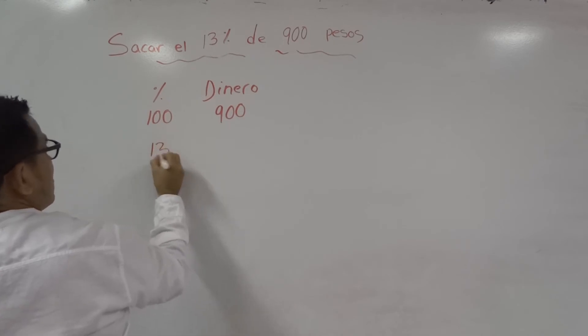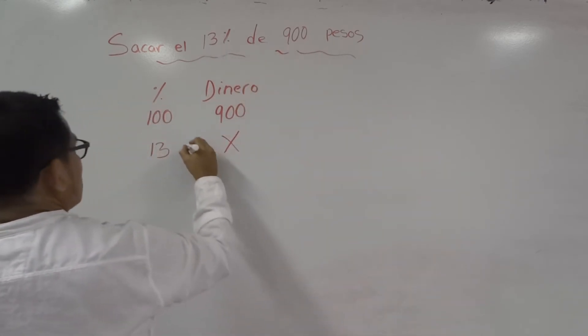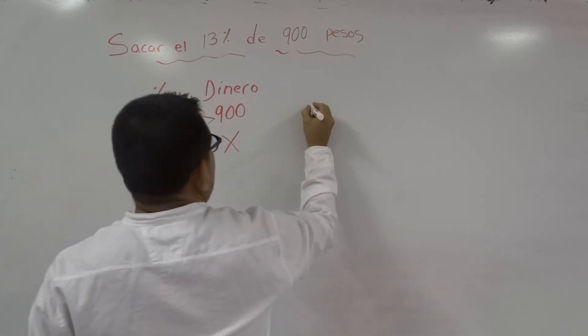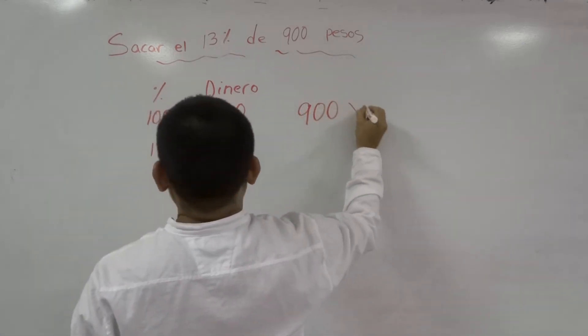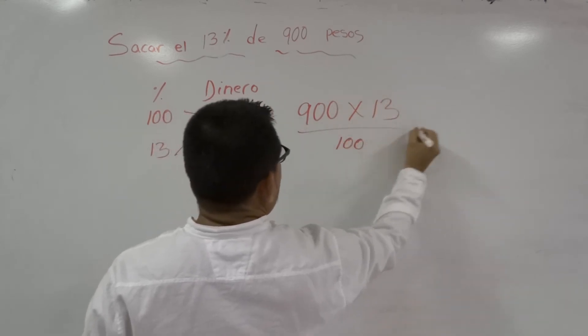Es el 13%. No conocemos lo demás, esta variable es la que vamos a buscar. Entonces multiplicamos este entre este: 900 por 13 entre 100. Esto es igual a 117 pesos.